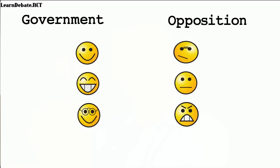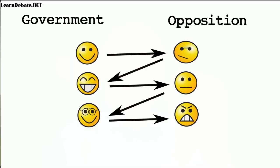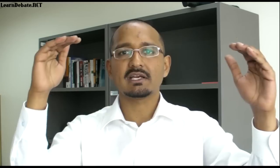Three speakers in government and three in opposition, and they will speak in alternating order. First one speaker from the government, then from the opposition, then the government, then the opposition, then the government, then the opposition. Each speaker will speak for seven minutes, so an entire debate will take 42 minutes.